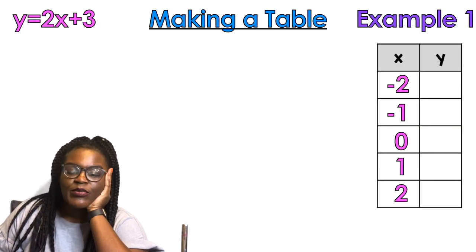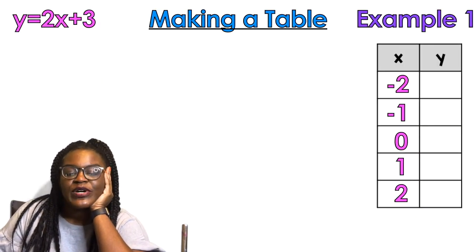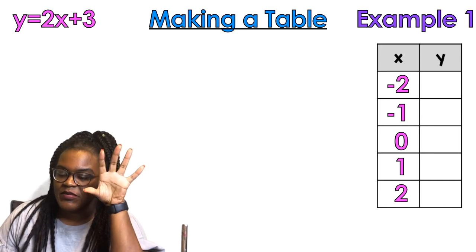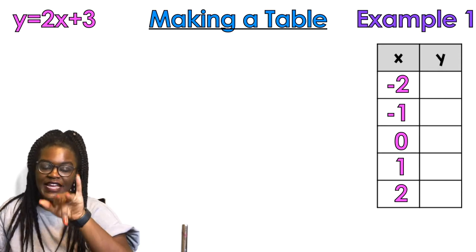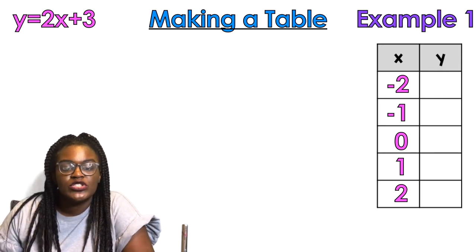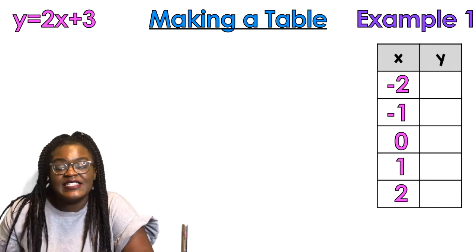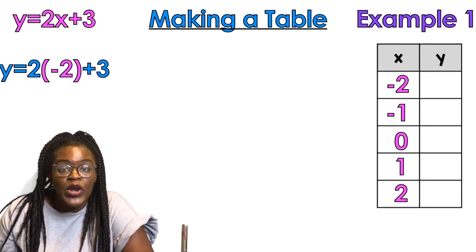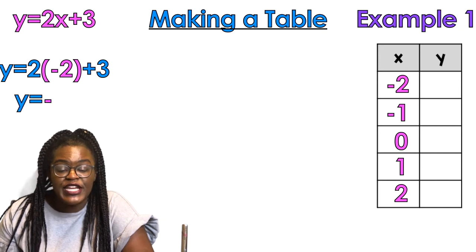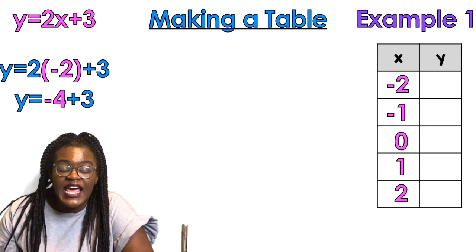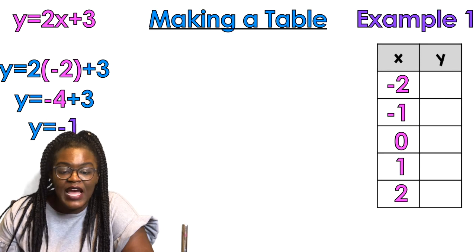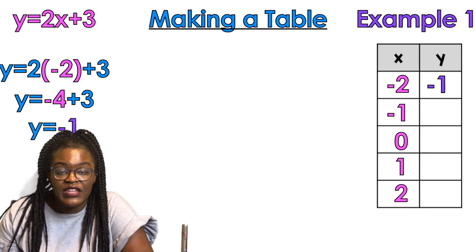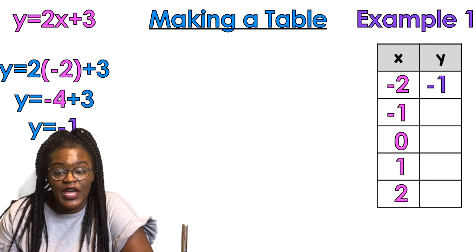In example number one, I have x values negative two, negative one, zero, one, two — those are kind of like our favorite x values. I'm going to take my function, which is y equals two x plus three, and instead of x I'm going to use negative two. Using PEMDAS, first multiplication: two times negative two is negative four, plus three gives me negative one. So negative two goes with negative one — that's my ordered pair, negative two comma negative one.